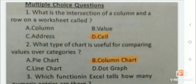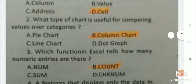Question 1: What is the intersection of a column and a row on a worksheet called? Answer is cell. Next: What type of chart is useful for comparing values over categories? Answer is column chart. Next: Which function in Excel tells how many numeric entries are there? Answer is COUNT.